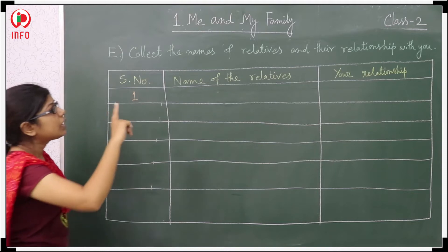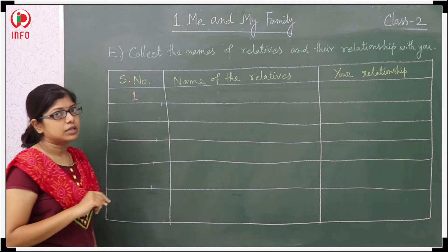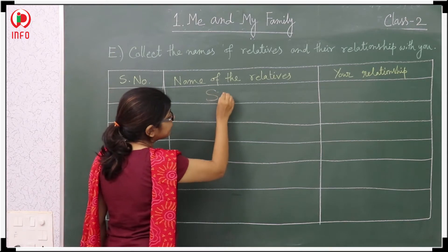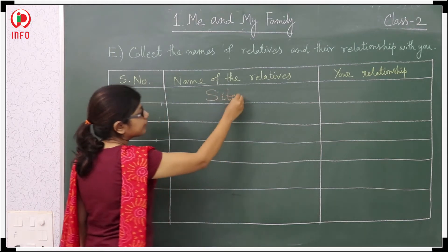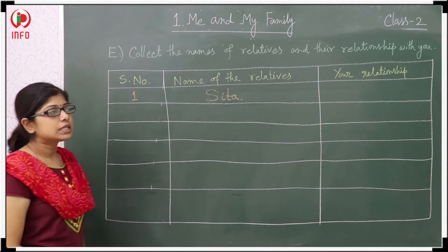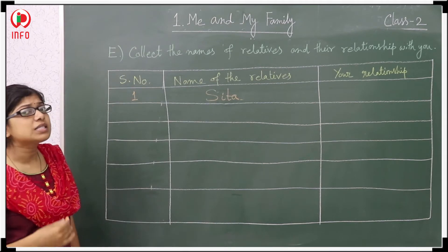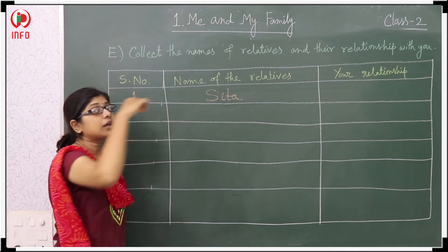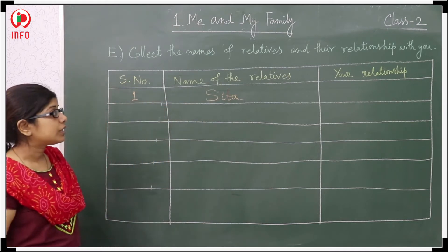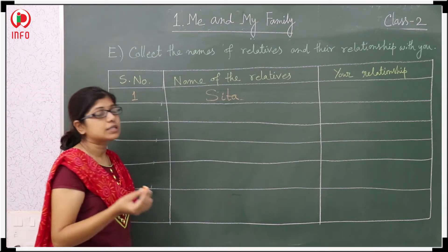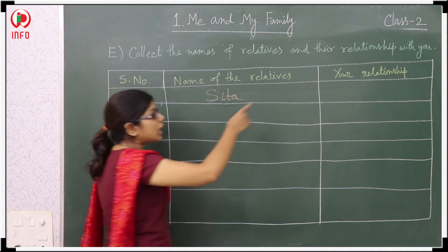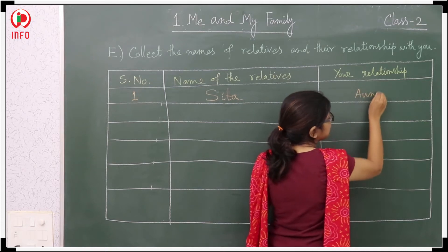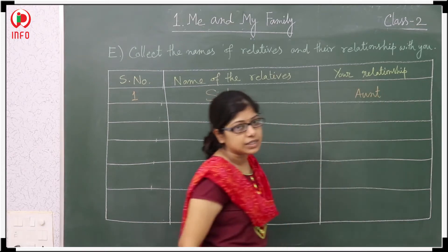Next one: name of the relatives. One name is Sita. Now what is the relationship between Sita and you? Actually she is my aunt. So I will write here aunt — A-U-N-T.